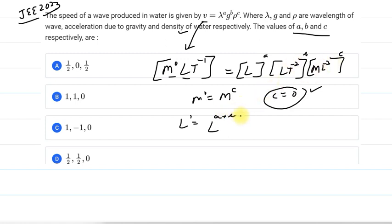They will be added. And then we have L raised to power minus 3C. So we'll equate that A plus B minus 3C is equal to 1.